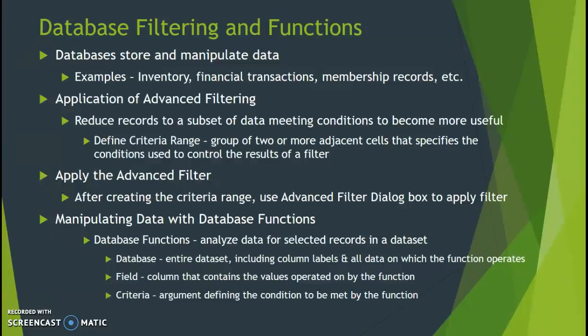You're reducing records based on some conditions or criteria that you define, so the data becomes more useful and manageable. The key is to define a criteria range — that's what specifies and creates your filter. When you apply the advanced filter, it takes the subset of data for all records that meet that criteria and sets them aside into a specified area.